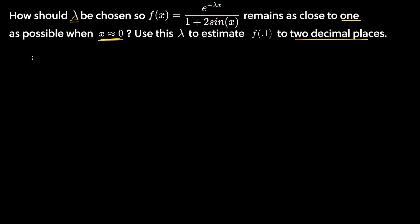We have two tools: a tangent line (linear approximation) or a quadratic approximation. I'm going to argue we want the linear approximation. If we find a lambda value that makes our linear approximation the line y = 1, then for any x value near zero, our approximation will be 1 — which is exactly what we're after.